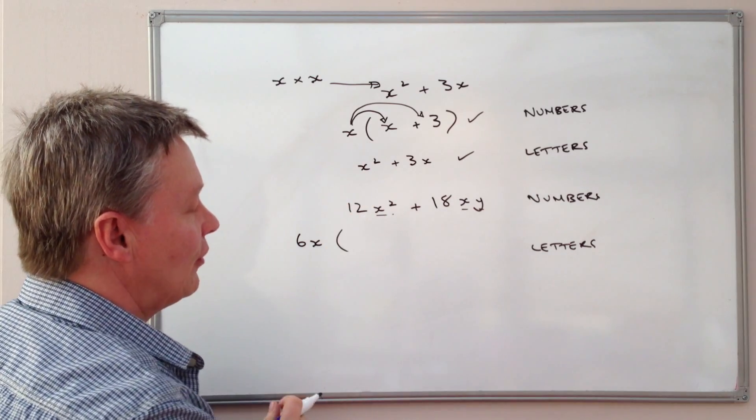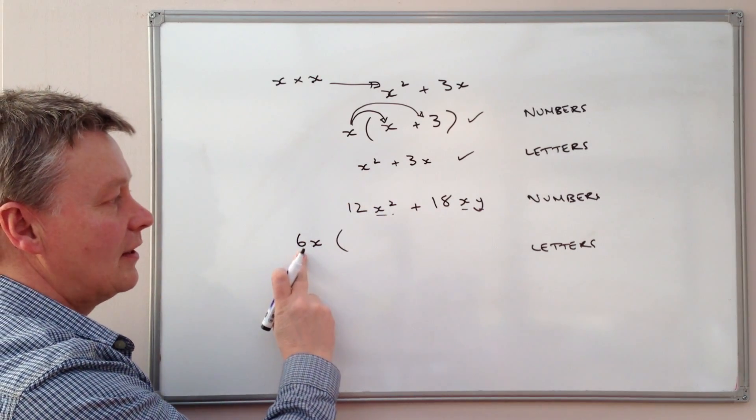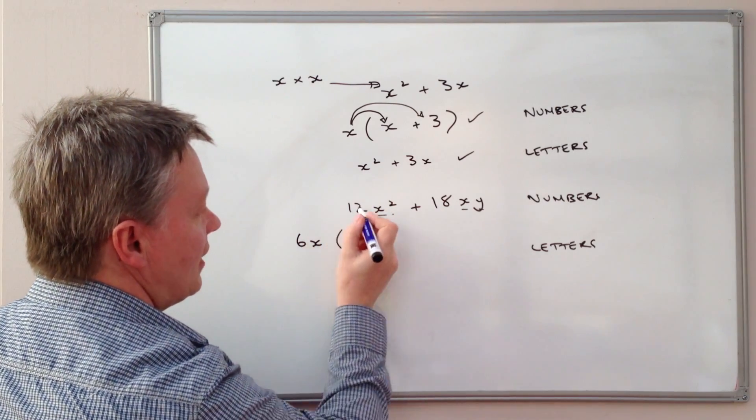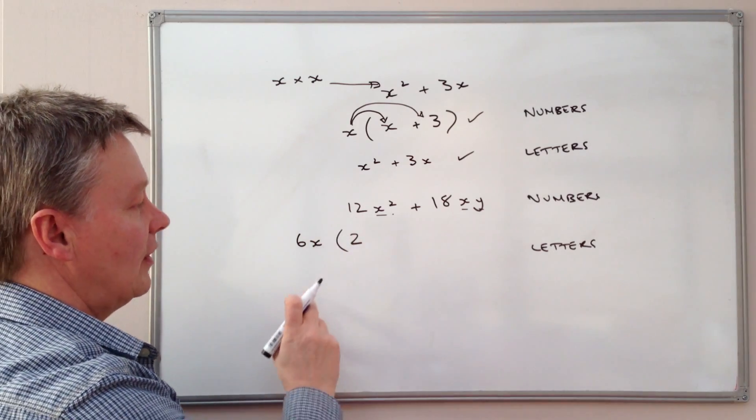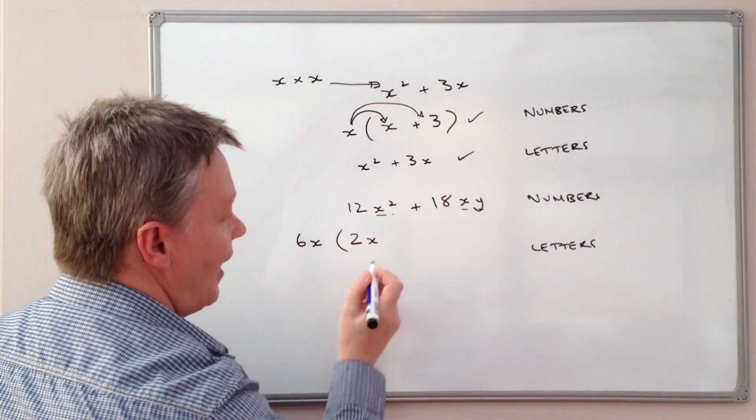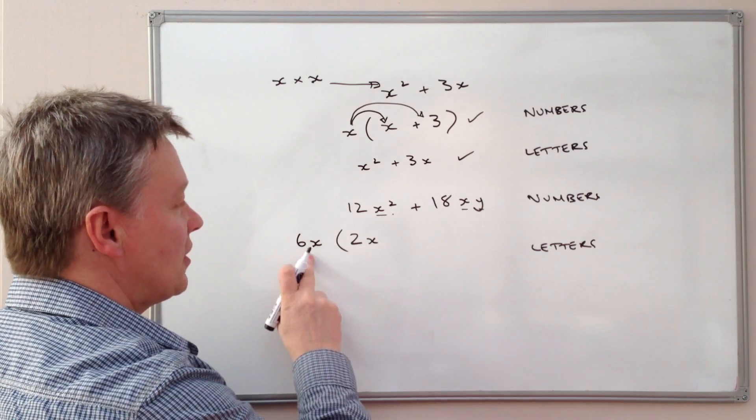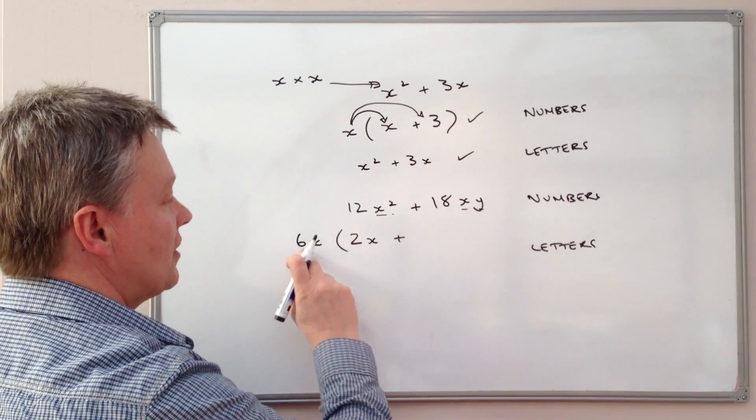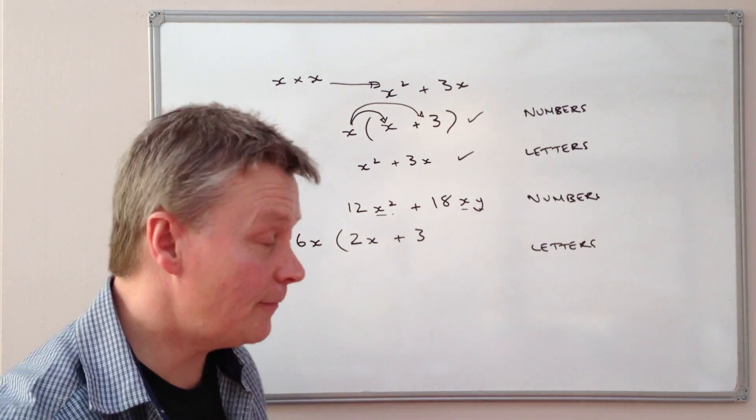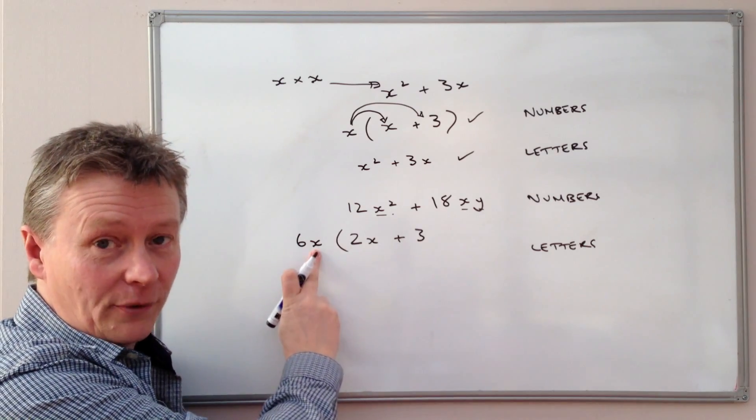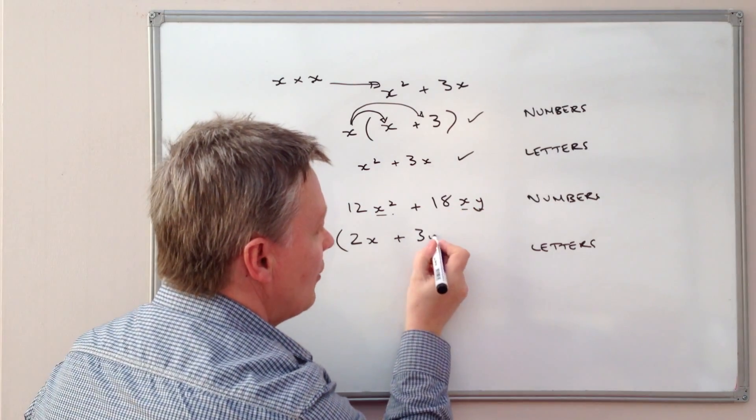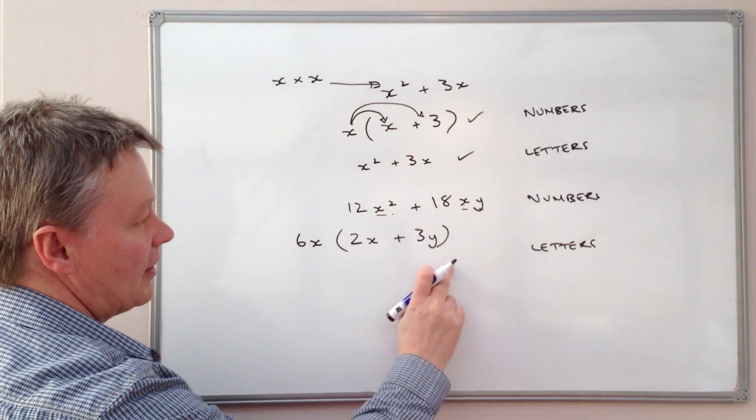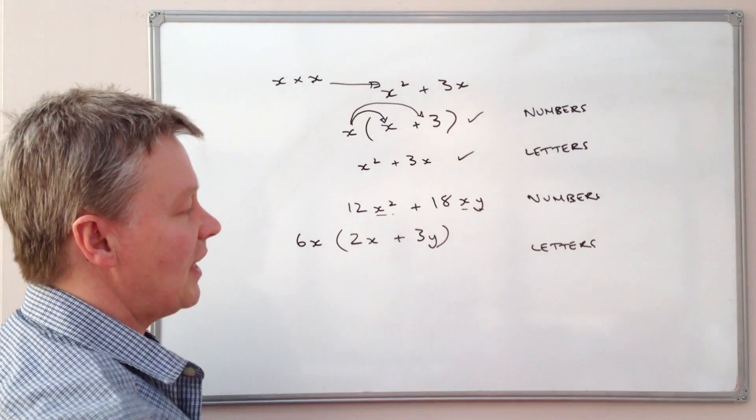So like we did before, what have we got to do to 6x, or what have we got to multiply 6x by to get 12x squared? Well, that would be 6 times 2 is 12 and x times x is x squared. What are we going to do to 6x to get positive 18xy? Well, it's going to be positive 6 times 3 is 18. We already have an x, so that's okay. We don't need that. But we do need a y, so we have to have a y in this equation. So this is the factorization of 12x squared plus 18xy.